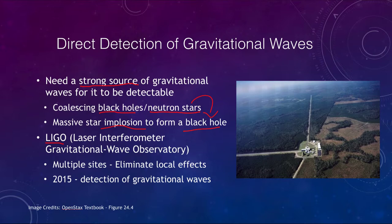Gravitational waves, even from colliding black holes, were still very weak. Local effects — such as somebody slamming a door or a truck driving nearby — could cause problems in the measurements. By looking at two sites, and now three, there are ways to eliminate any local effects. If you see an event at one observatory but not the other, then you know it was something local and you can discard it.